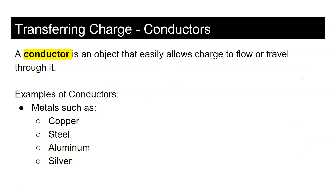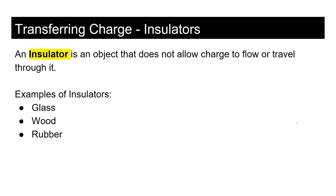A conductor is an object that easily allows charge to flow through it. Examples include copper, steel, aluminum, and silver. This is why most wires are made of copper — it's a good conductor and relatively inexpensive. An insulator, on the other hand, does not allow charge to flow easily — glass, wood, and rubber are insulators.